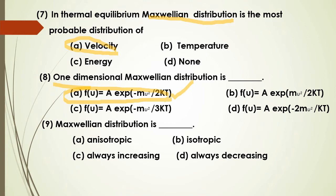The Maxwell distribution is isotropic. Isotropic means the same in all dimensions — it is the same in every direction.